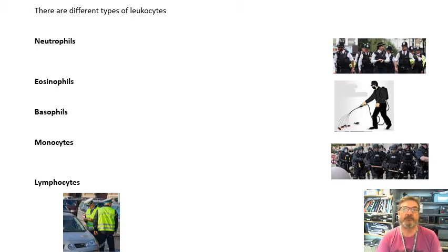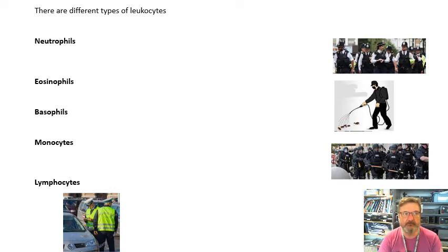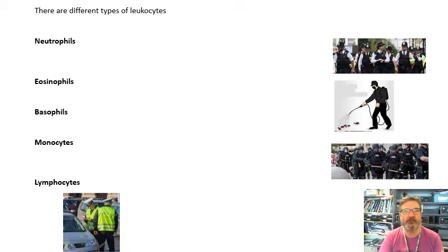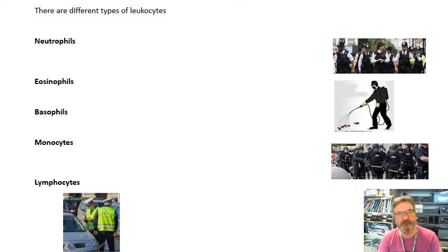There are different types of white blood cell. You don't need to know all of them in great detail. I would concentrate on neutrophils and lymphocytes — neutrophils because they are the most common, and lymphocytes because they relate to antibodies, which is quite interesting.